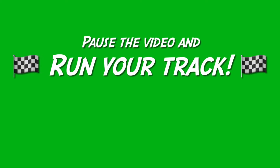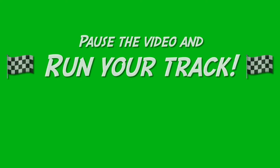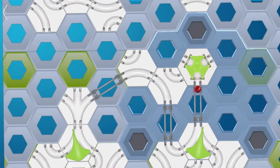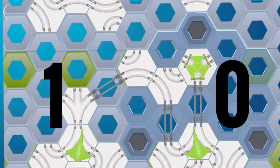Leave the first marble in the landing pad and run a second marble through the track. What happened there? The rightmost switch moved back to 0, pointing left, and the next switch to the left moved to 1, pointing right. So the first two switches together now read 1, 0. Hmm, that's weird. Doesn't 1, 0 mean 10? But we've only counted two marbles so far. Does a computer think that 10 means 2?